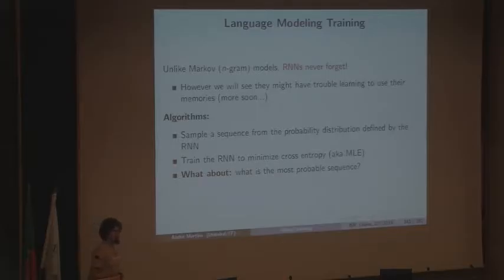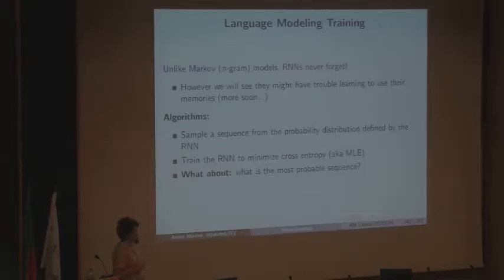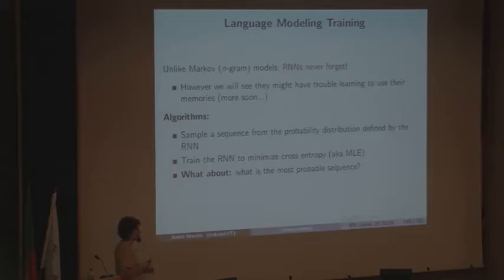In NLP you may have heard of Markov N-gram models, which are much simpler models that don't involve neural networks. They estimate probabilities from N-grams — say five-grams — collecting statistics about all five-grams observed in data and estimating probabilities using maximum likelihood. An important limitation of these models is their finite memory: a five-gram language model is only conditioned on the last five words, and cannot remember anything further back. RNNs, by contrast, never forget.